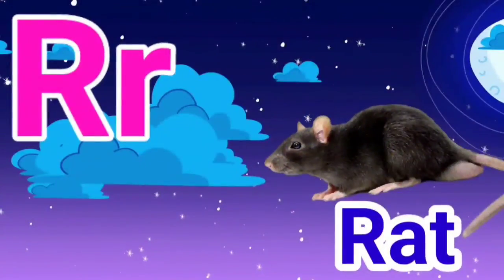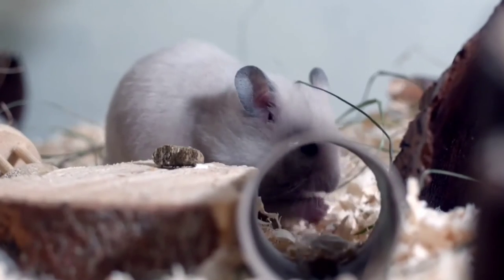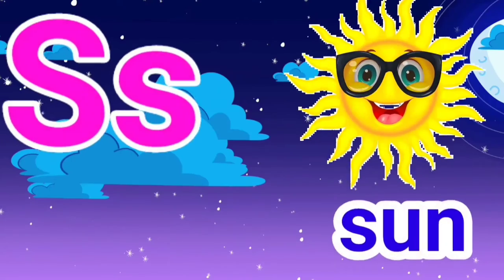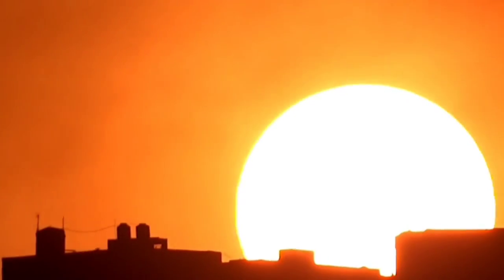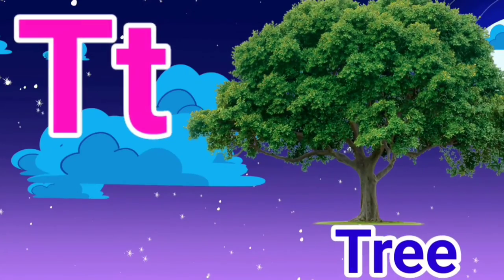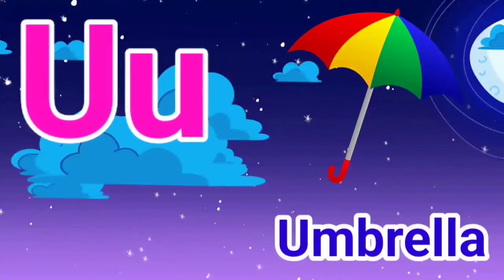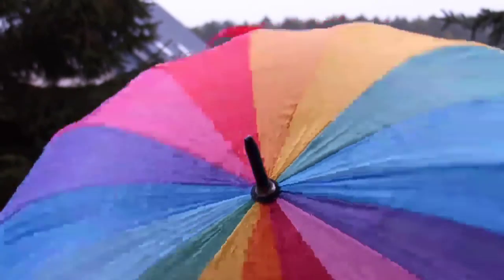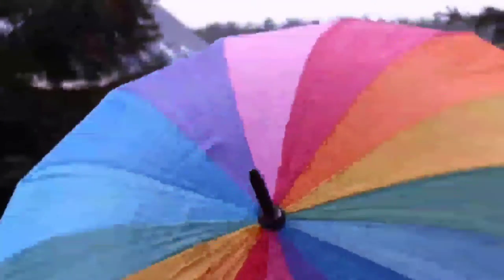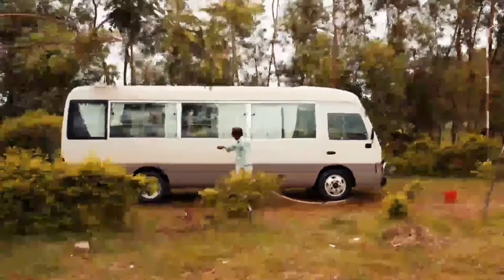R for Rat, S for Sun, T for Tree, U for Umbrella, V for Van.